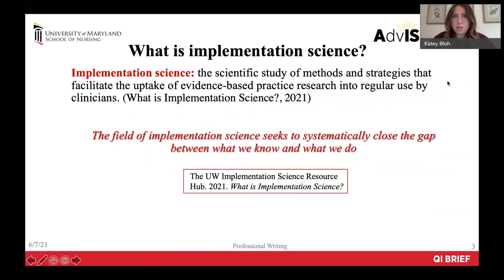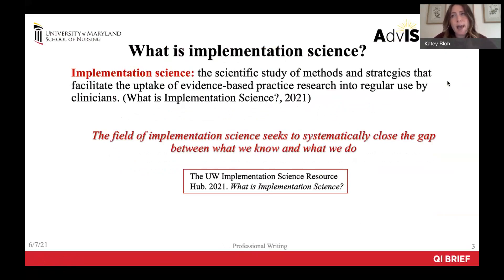So what is implementation science? Implementation science is the scientific study of methods and strategies that facilitate the uptake of evidence-based practice research into regular use by clinicians. The field of implementation science seeks to close the gap between what we know and what we do. The DNP projects at the University of Maryland are quality improvement projects that use implementation strategies and tactics to improve healthcare by strategically implementing evidence-based practices.